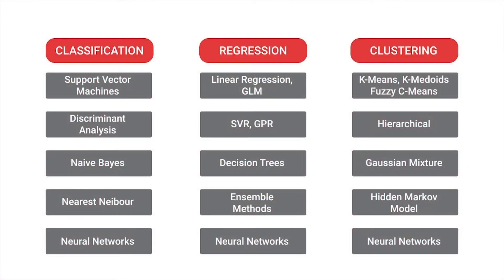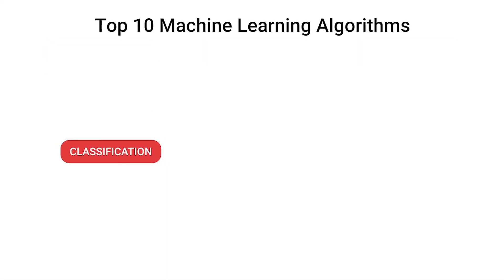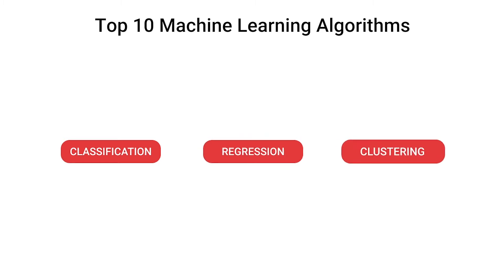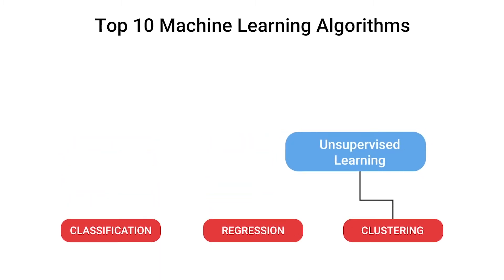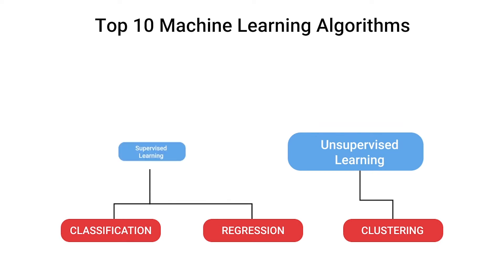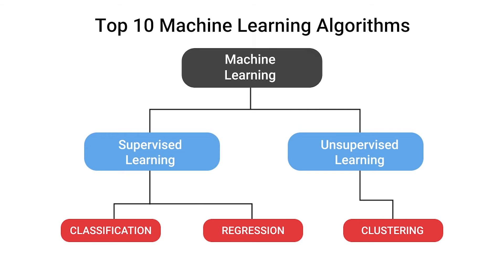Here we'll be looking at the algo side of it, relating to a particular task. The task can be classification, it can be regression, it can be clustering — clustering is part of unsupervised learning. Regression and classification are part of supervised learning. When you are predicting something — what would be the sales, what would be the profit, what would be the rainfall — if you are predicting a continuous value or a continuous output, that becomes a regression problem.